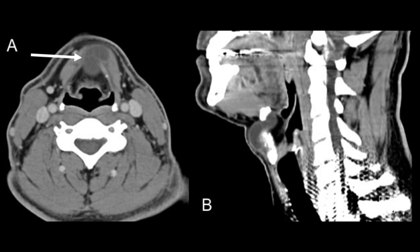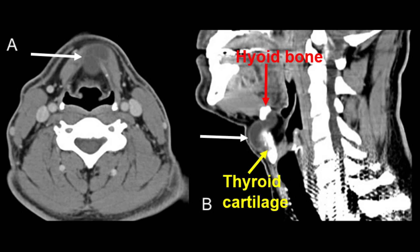On the left side of the screen we have axial CT images. Here you can see a well-defined lobulated hypodense lesion indicated by the arrow. There is no peripheral enhancement after contrast administration, confirming its cystic appearance. Let's now look at the sagittal reconstructions on the right. We can clearly identify the lesion located just inferior to the hyoid bone.